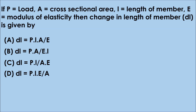Question No. 10: If P is load, A is cross-sectional area, L is length of member, and E is modulus of elasticity, then change in length DL is given by — Option A. DL = (P × L × A) / E, Option B. (P × A) / (E × L), Option D. (P × L × E) / A. The correct answer is option C. DL = PL / AE — product of load and length divided by product of cross-sectional area and Young's modulus.